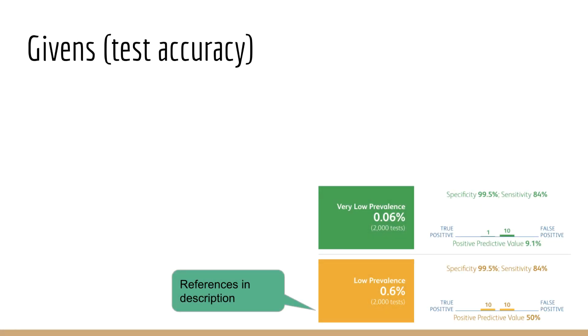We also have some important data about the accuracy of the test. According to the webpage for the test, the test has a specificity of 99.5% and a sensitivity of 84%. So what do these numbers mean? In fact, they correspond to the likelihood probabilities in Bayes' rule. Specifically, the sensitivity is the probability that the test comes back positive, given that the patient has the virus. We call this the true positive rate. Using our notation, this is p of t equals 1, given x equals 1.